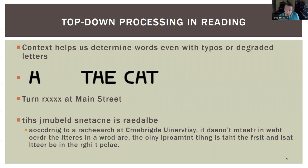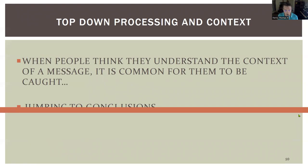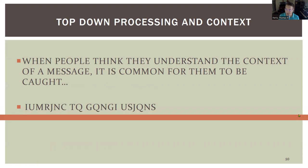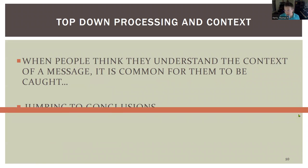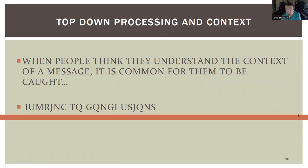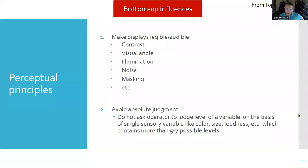We're not trying to trick people when designing readable things, but this demonstrates the power of top-down expectations. When people think they understand the context of a message, it's common for them to jump to conclusions. The context of a sentence completion makes us expect a certain phrase — even if the bottom-up input is actually different or ambiguous — showing just how powerful that top-down influence can be.